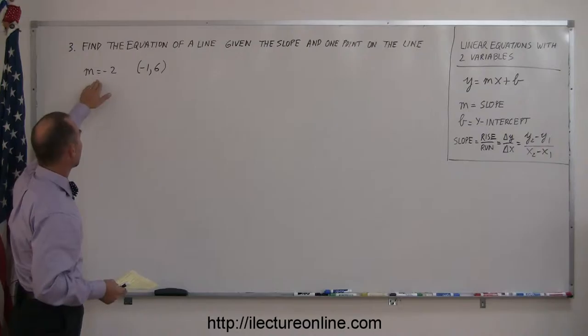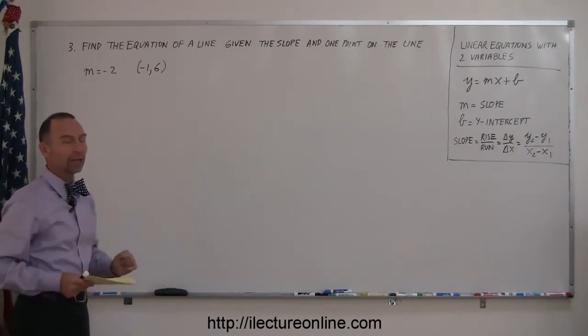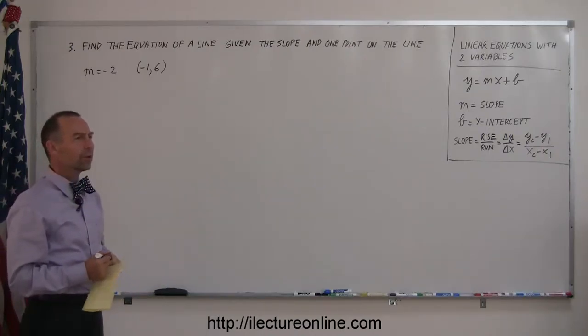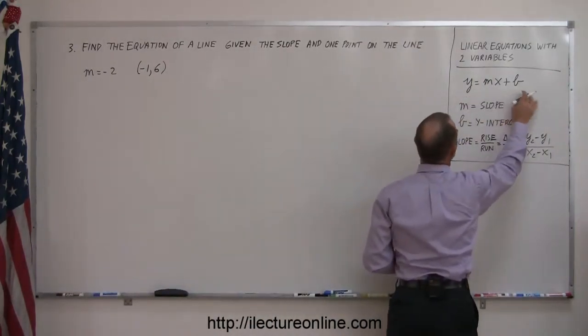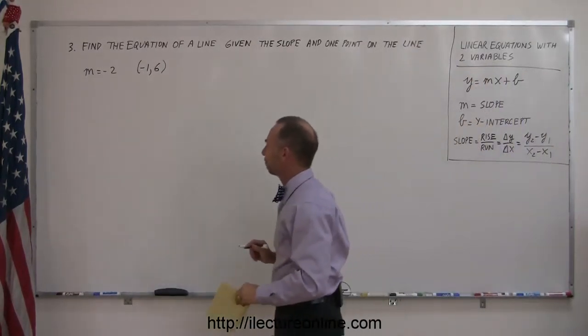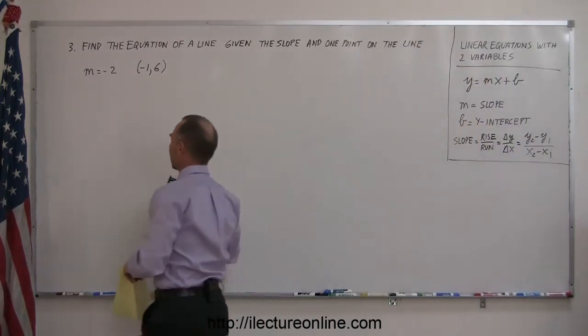Here's the slope, m equals negative 2, and there's a point on the line. So the thing always to do is to say, well the equation must look like this, so write that down. I have to have y equals mx plus b.